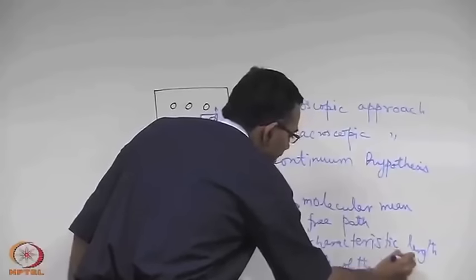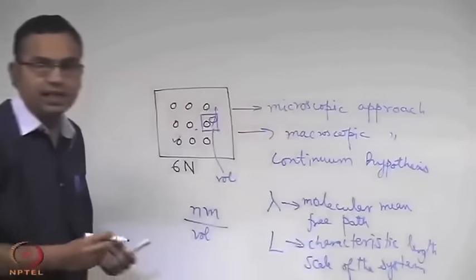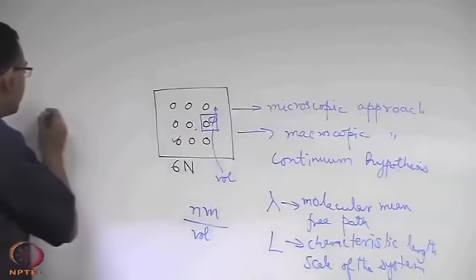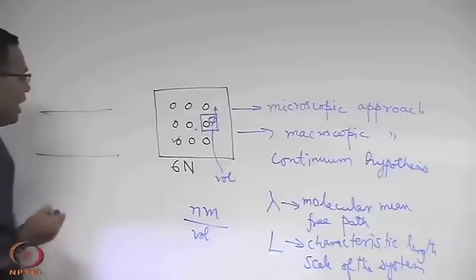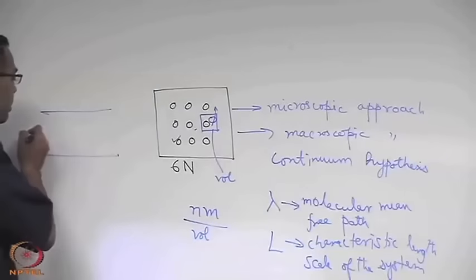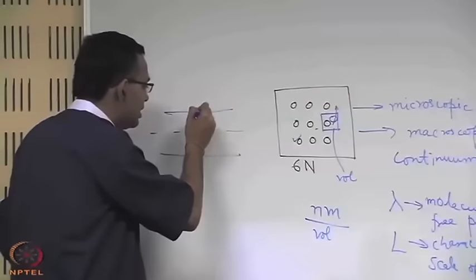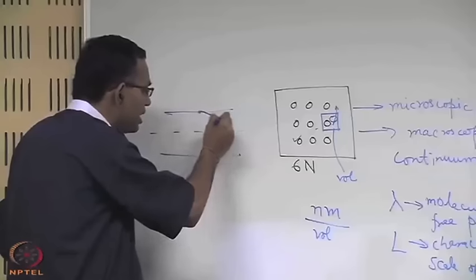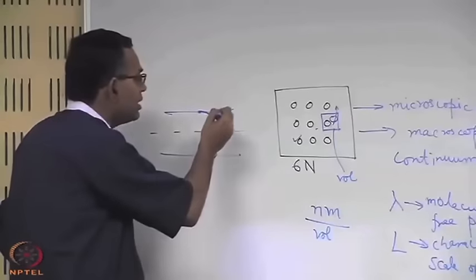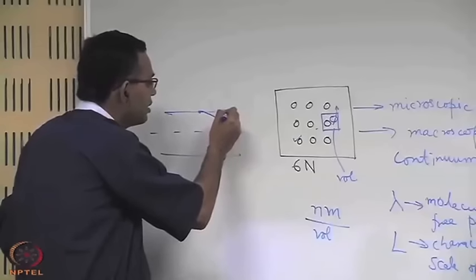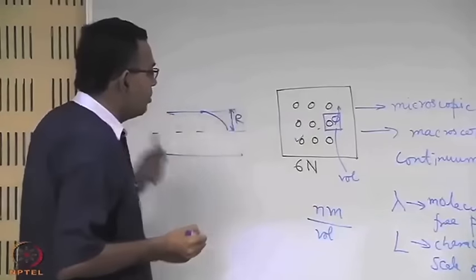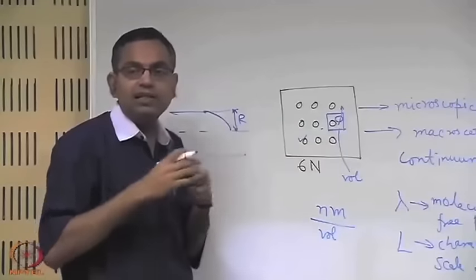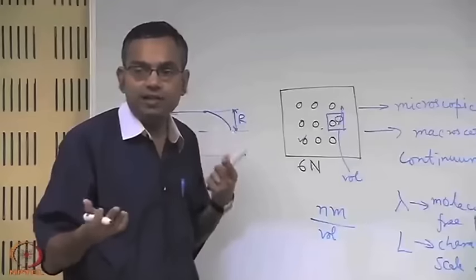The characteristic length scale L is a distance over which characteristic changes can take place. For example, if you have flow of gas through a pipe, characteristic changes take place from the wall where the velocity is zero to the centerline where the velocity is maximum. So the characteristic length can be the radius of the pipe, but in engineering it is typically considered as the diameter, with the understanding that it does not change the order of magnitude since diameter is just two times the radius.